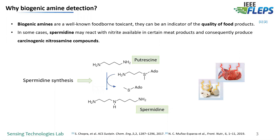One may ask why biogenic amine detection. Biogenic amines are well-known foodborne toxicants. These volatile amine compounds are heavily present in protein-containing food and can serve as a food quality indicator. Part of the biogenic amine family is spermidine as well.